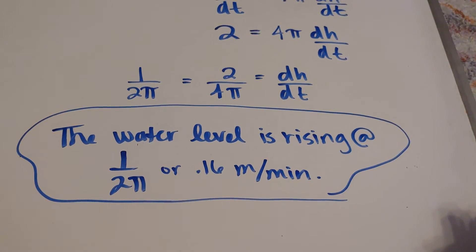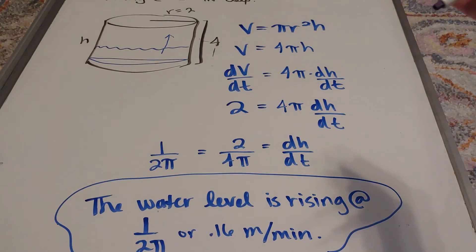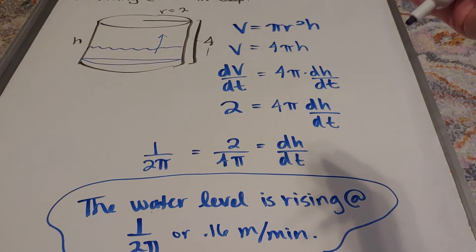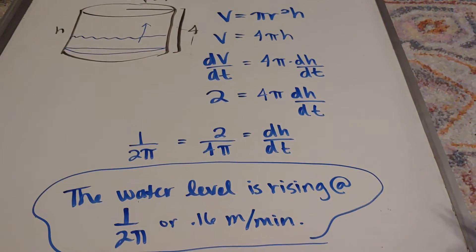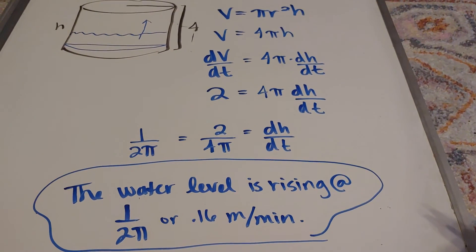And there we have it. For cylinders, you will always plug in the radius from the beginning, always for cylinders, because assuming it's standing upright like we have it, that's not changing at any point in the problem.